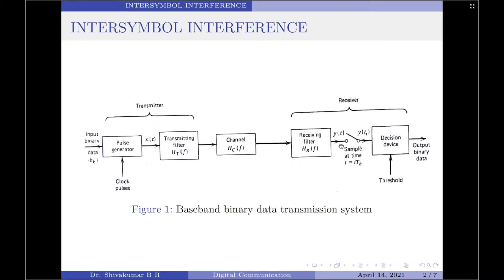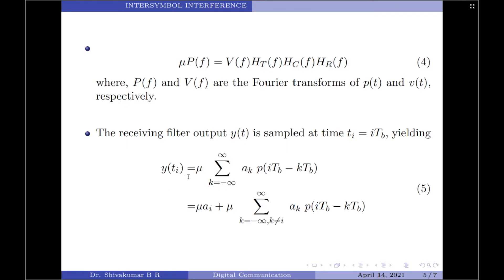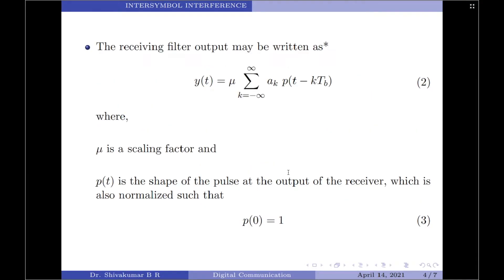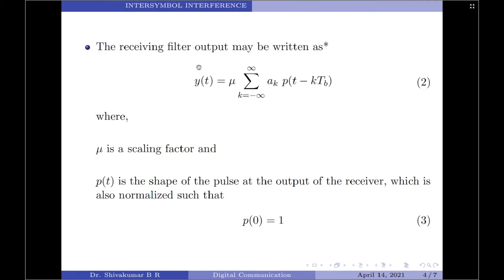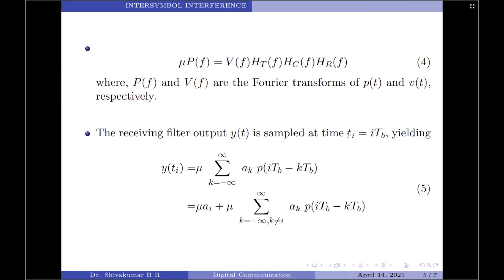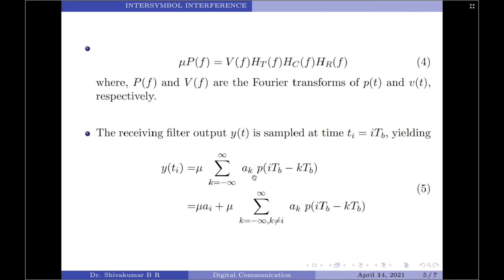Coming back to the diagram, the output of the receiving filter y(t) is sampled at time t equals i*TB. Applying this condition to the equation for y(t), we get: y(ti) = mu times summation over k from minus infinity to plus infinity of AK times p(i*TB minus k*TB). We now split this equation into two parts: for k equals i, and for every other value of k.